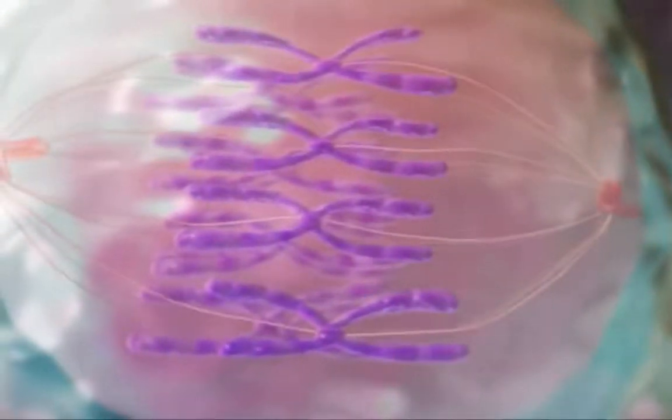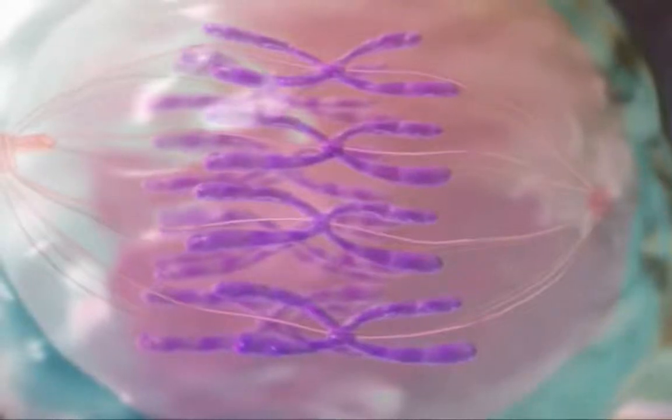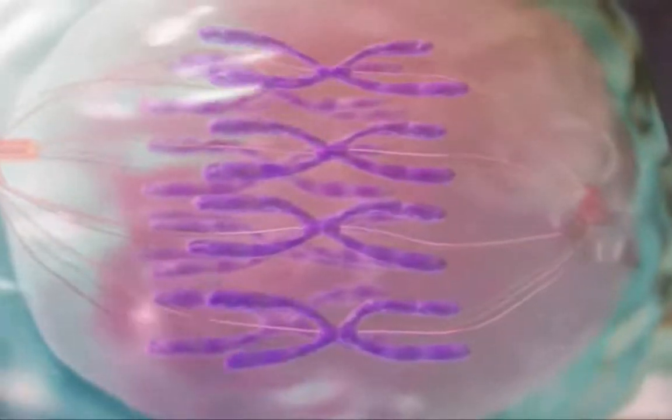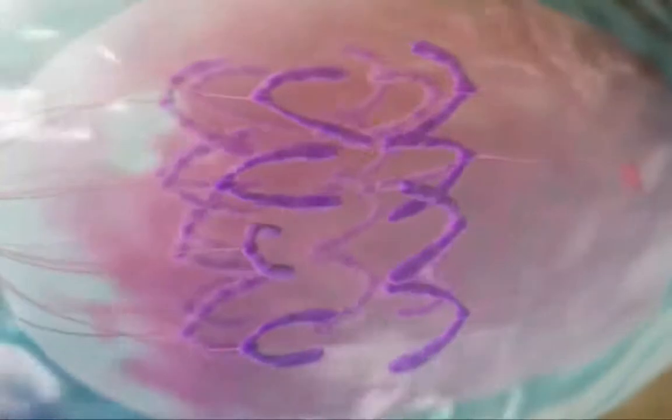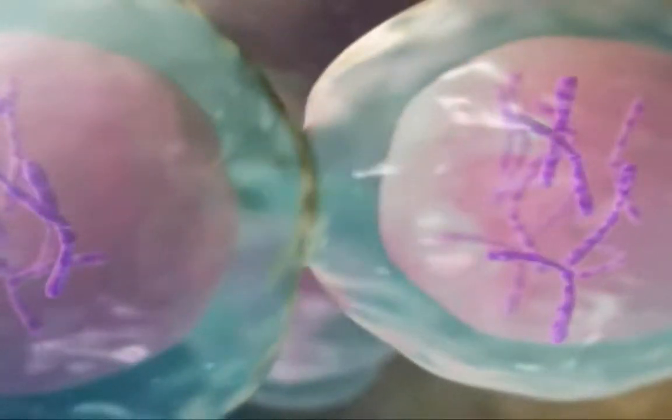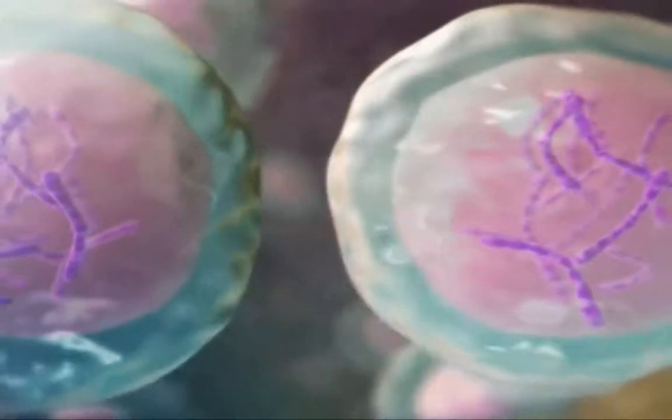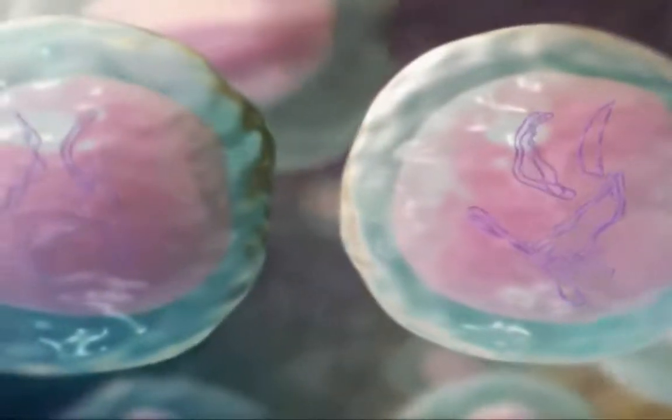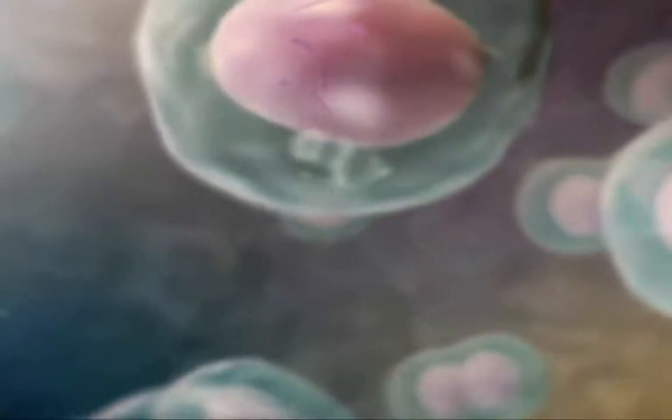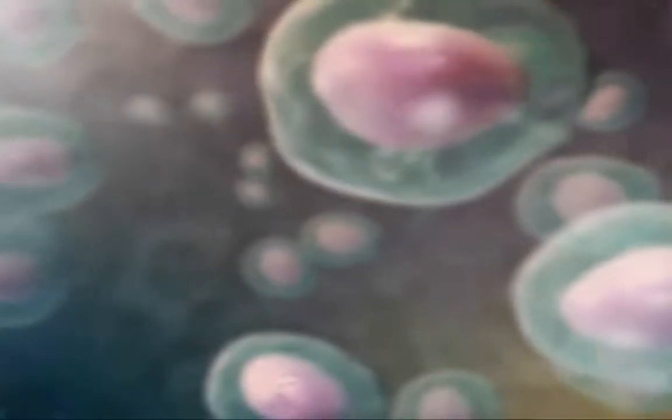So the original cell would have, let's say, 23 chromosomes, and the brand new cell would have the exact same amount. Thomas Morgan looked at this and said, this might be the feature that I've been looking for as far as that signal that helps determine the different features of organisms.